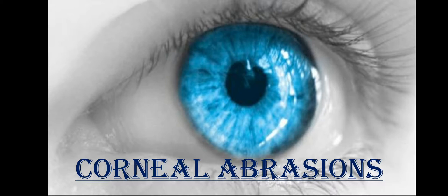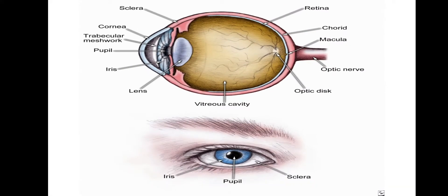The first corneal condition we will cover is corneal abrasions, that is corneal injury. What is cornea? Cornea is an epithelial layer. It forms the anterior one-sixth of the eye, and that anterior cover is transparent. The anterior part of the eyeball is the cornea, and it is the main refractive surface of the eye.